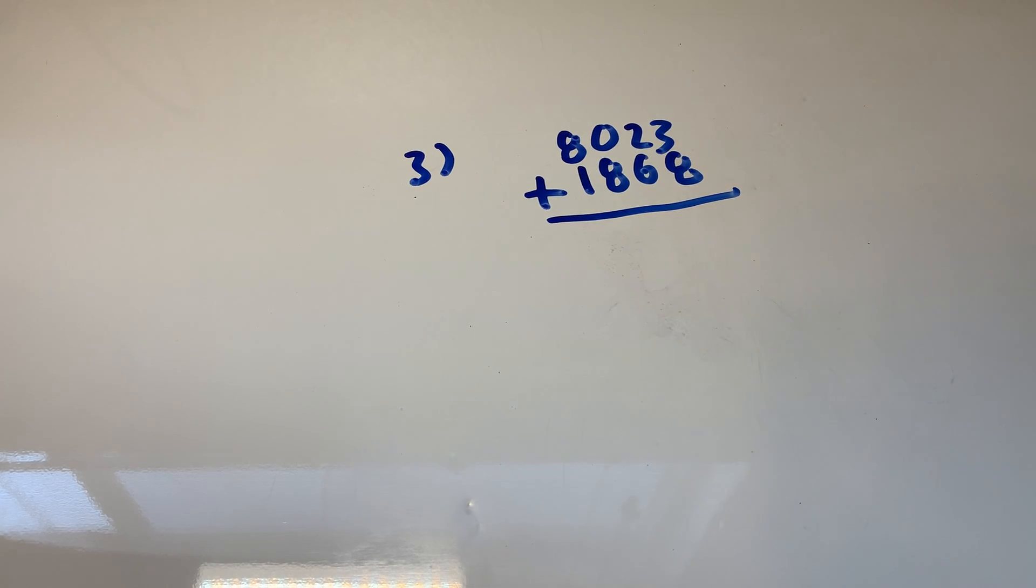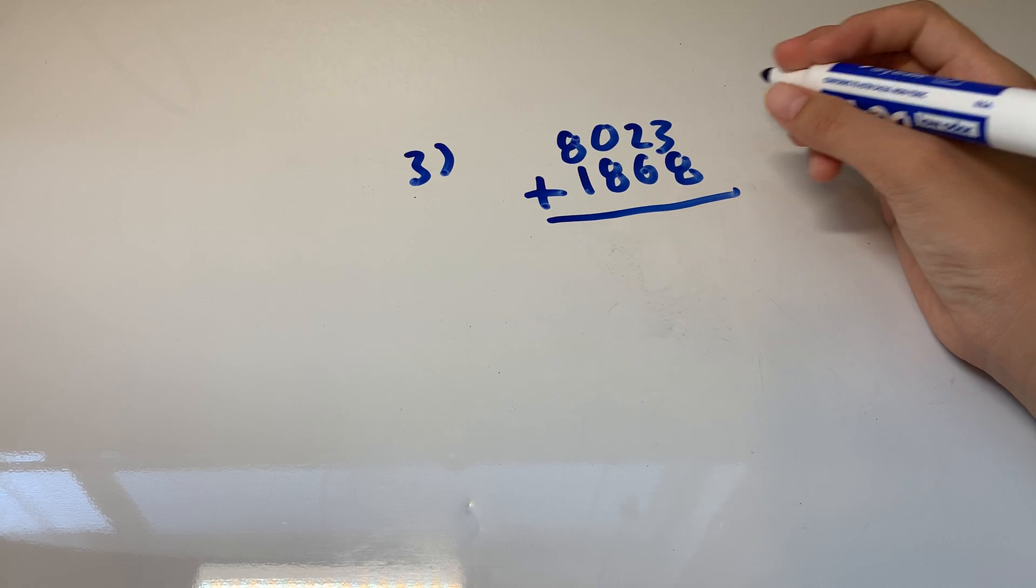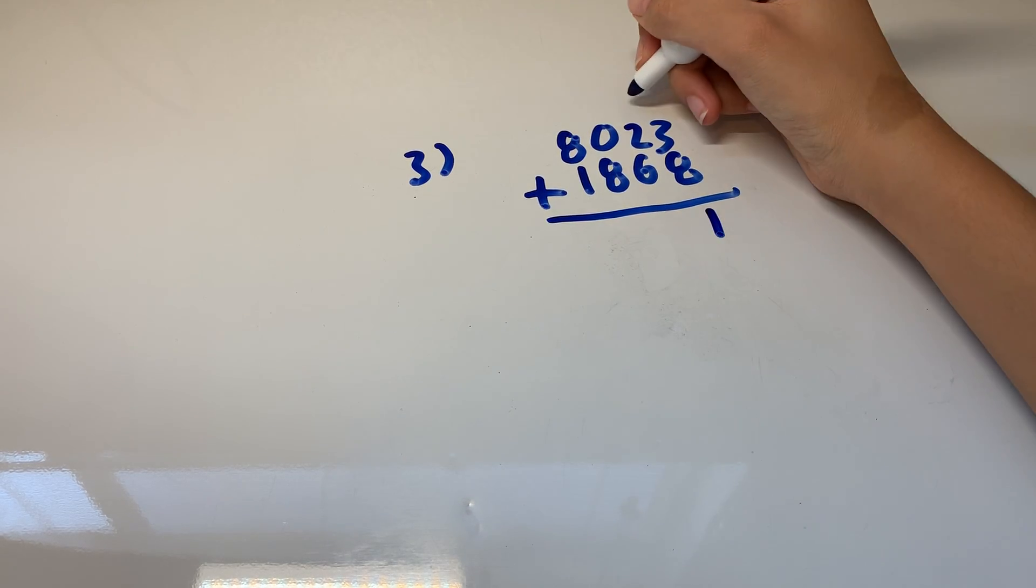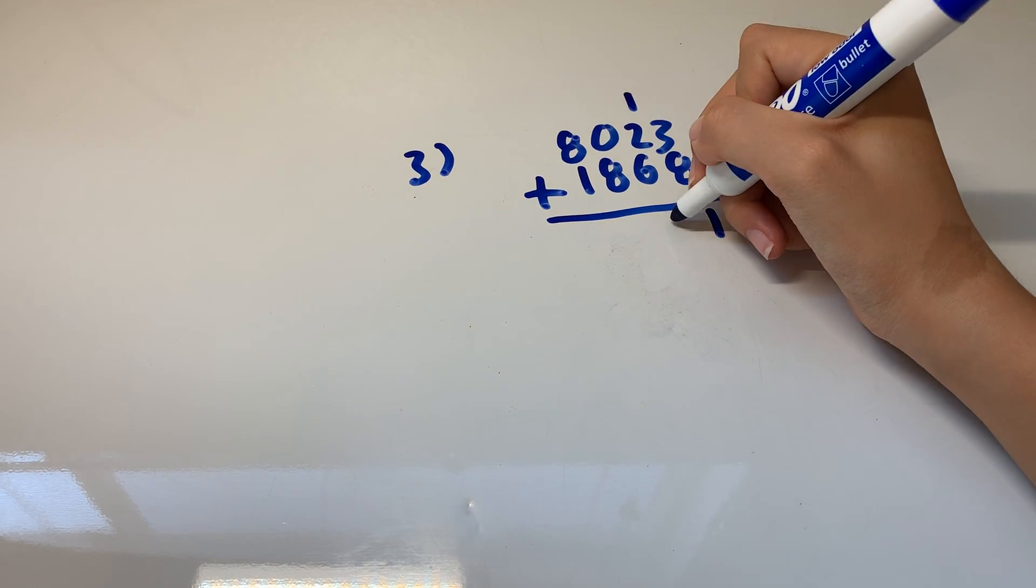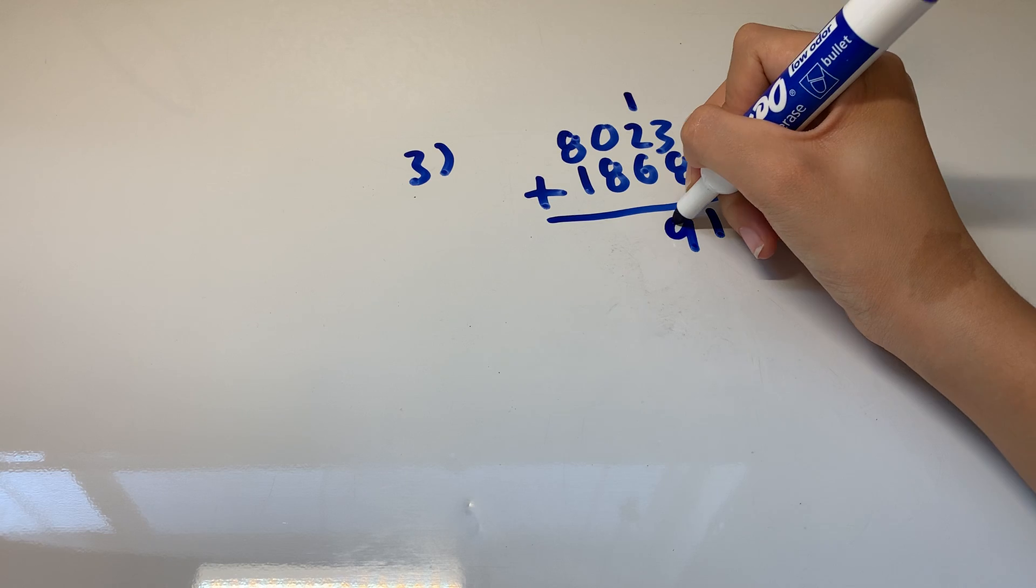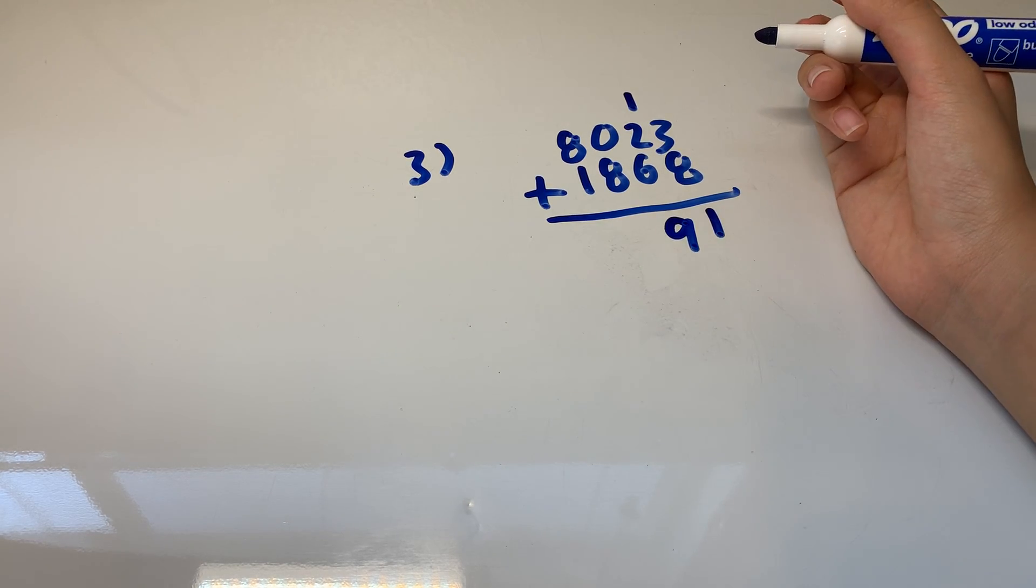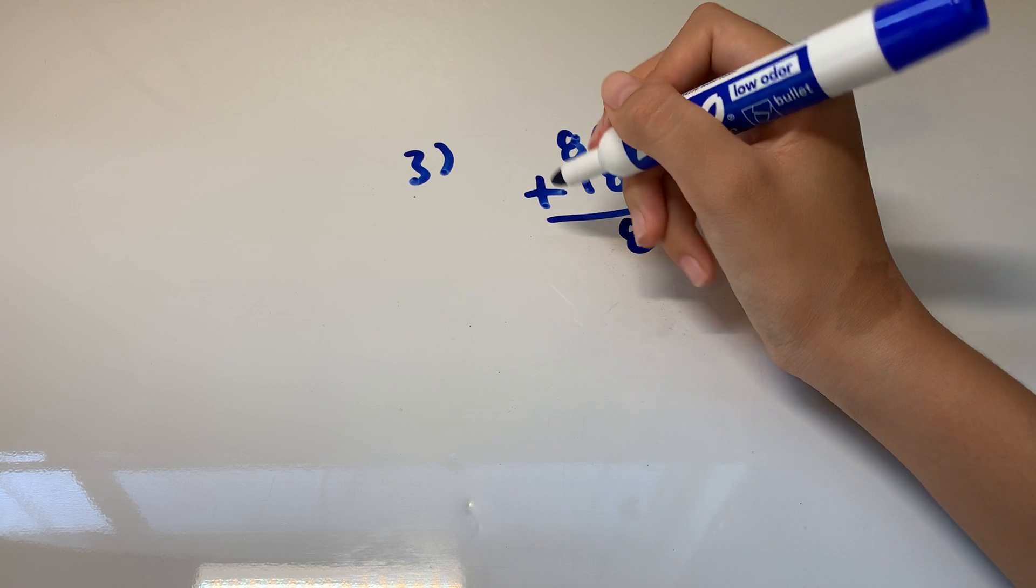We can just start adding. Now don't be scared just because it's a big number. I know it might seem overwhelming but it's just like regular addition. So three plus eight is 11, right? Bring down the one and carry over the other one. Two plus six is eight plus one is nine. And then zero plus eight, zero plus anything is just the number. So zero plus eight should be eight. And eight plus one is nine.